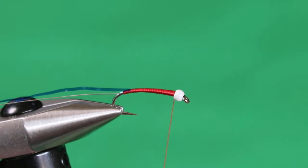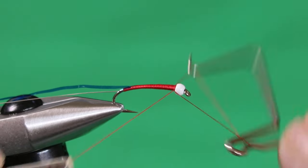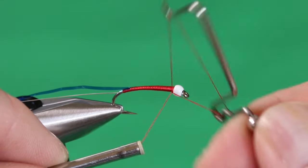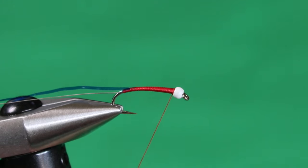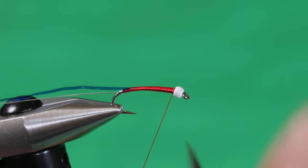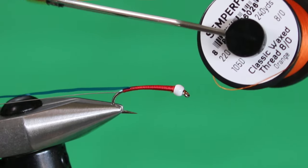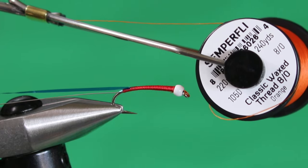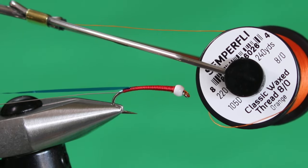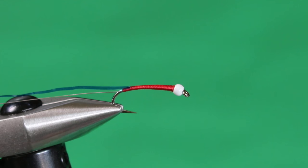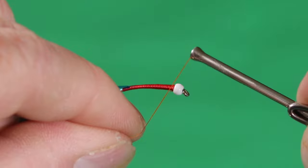We're going to do a quick three-turn whip finish because we're going to transfer our thread because we're going to put a little bit of a hot spot thorax on here so it stands out a little bit better at depth. For this fly, we're going to use some of the Semperfli ADO in the classic waxed in orange. You could also use a fluorescent orange or a fire orange, some bright hot orange, bright orange coloration.